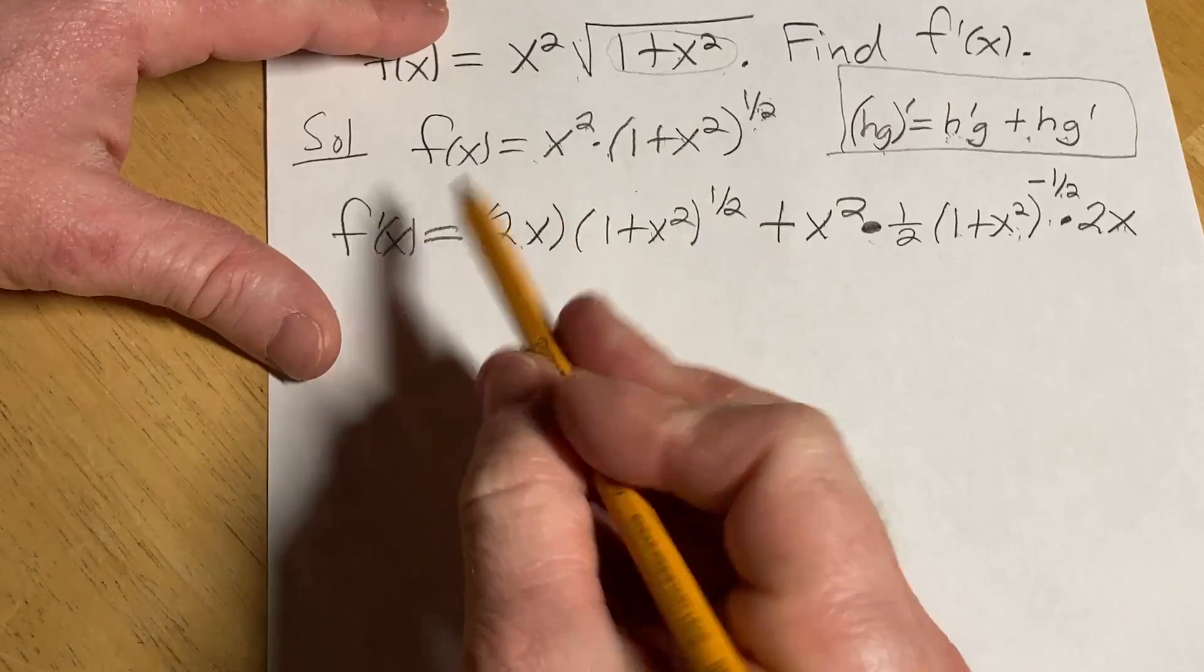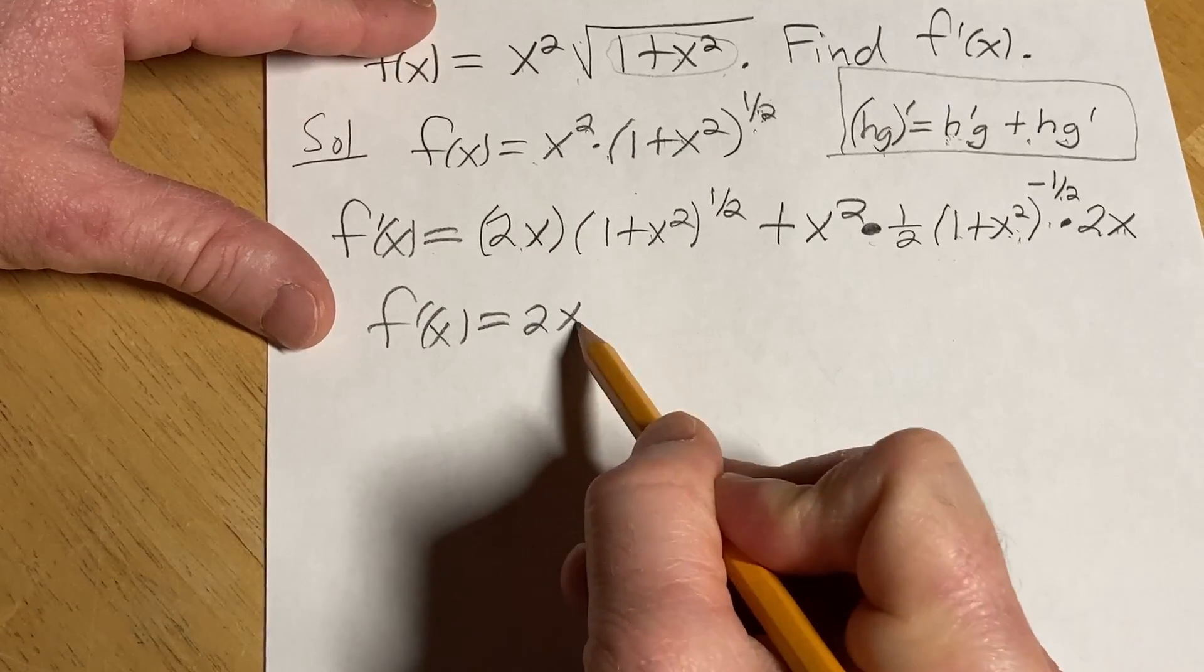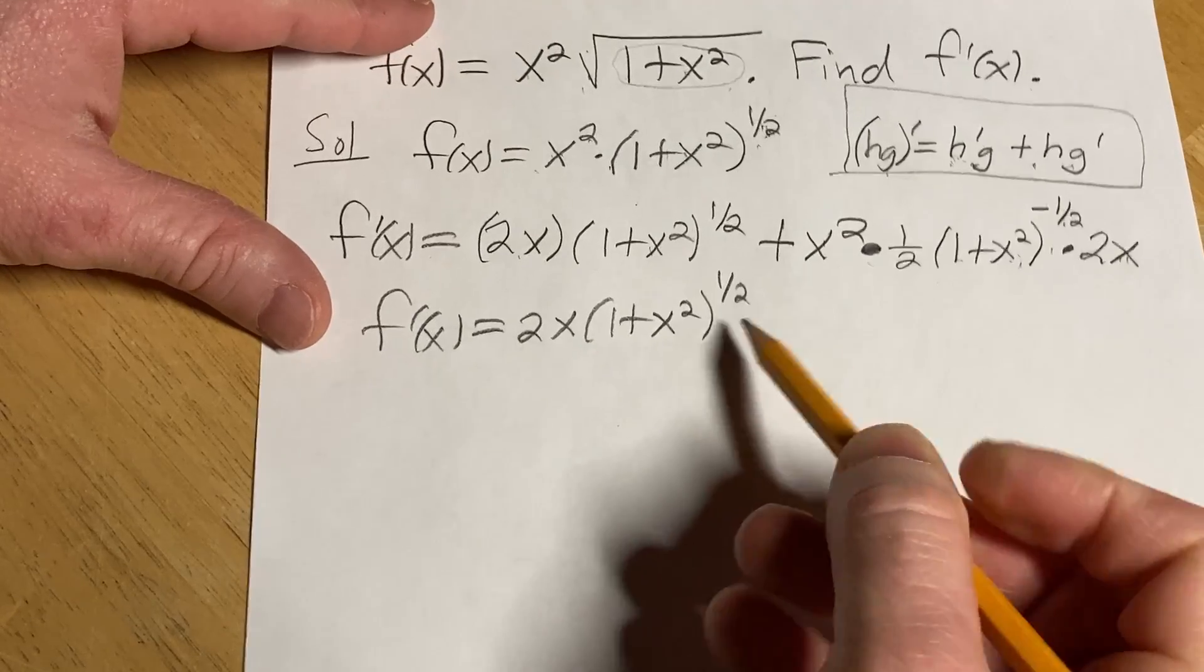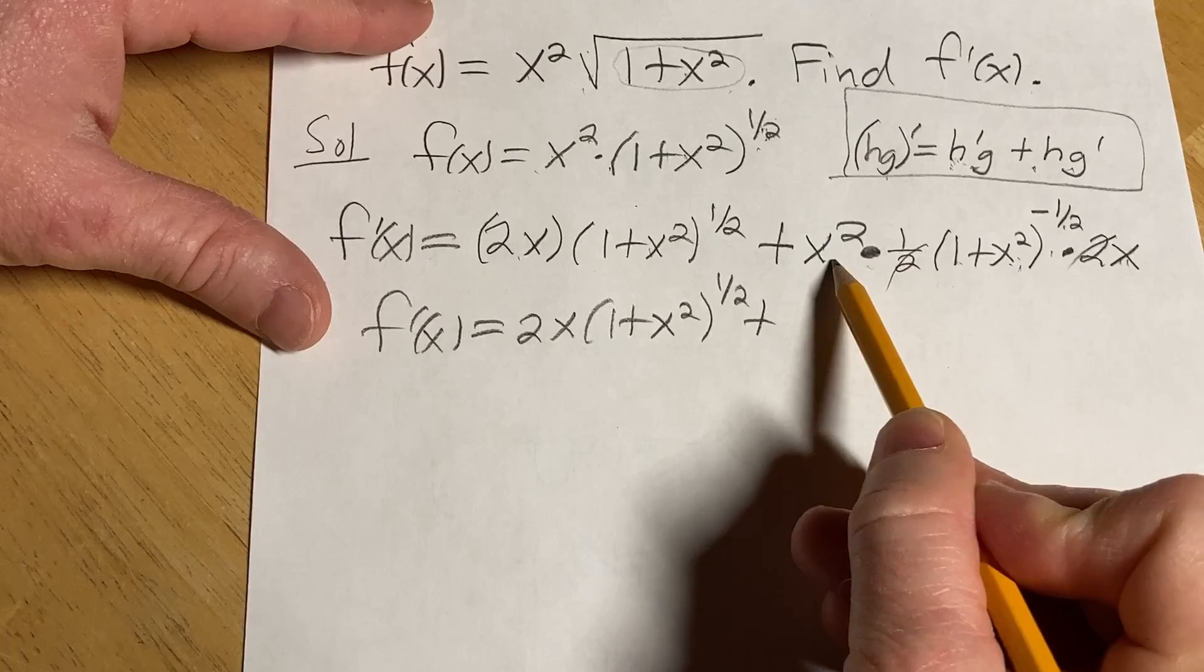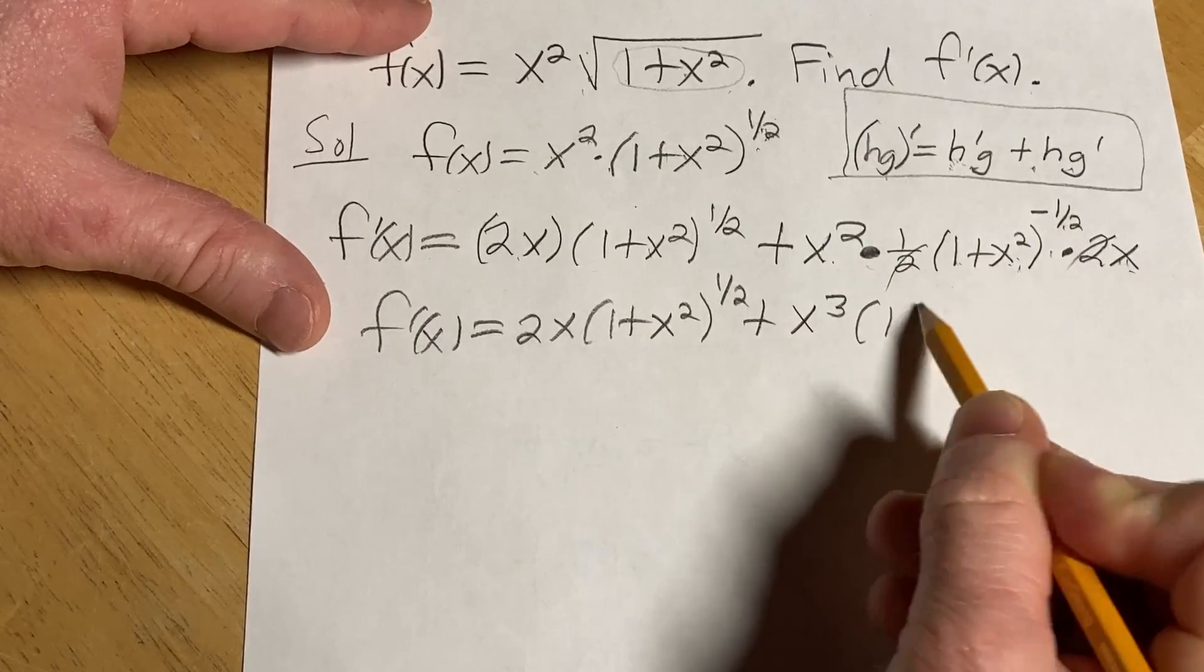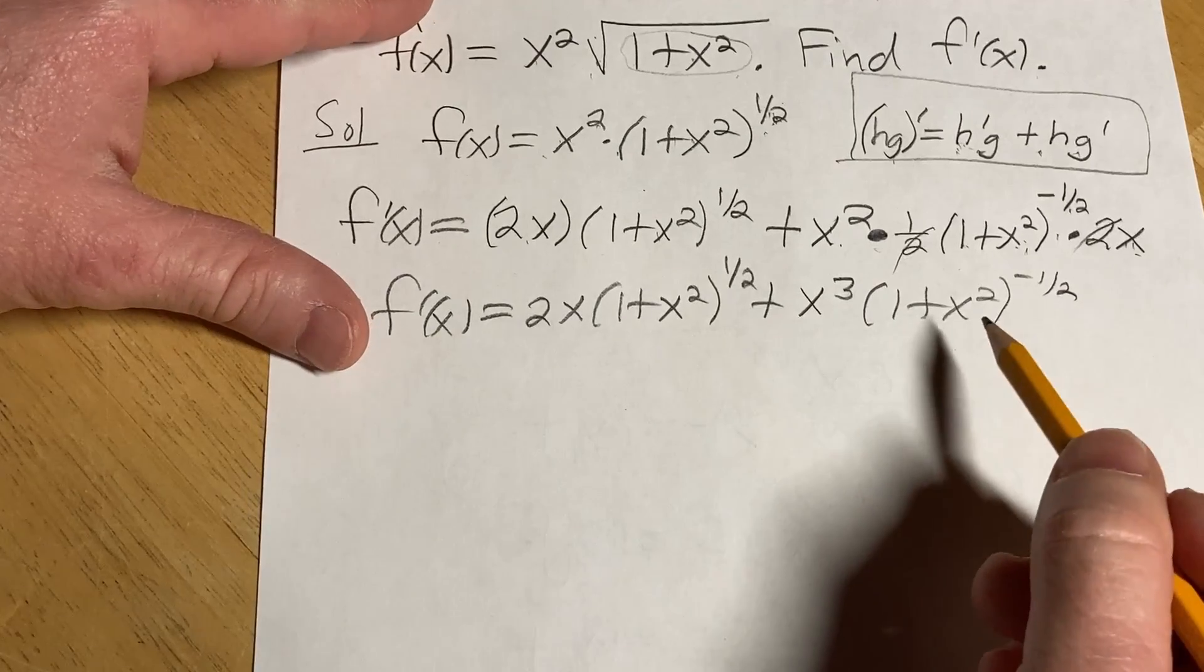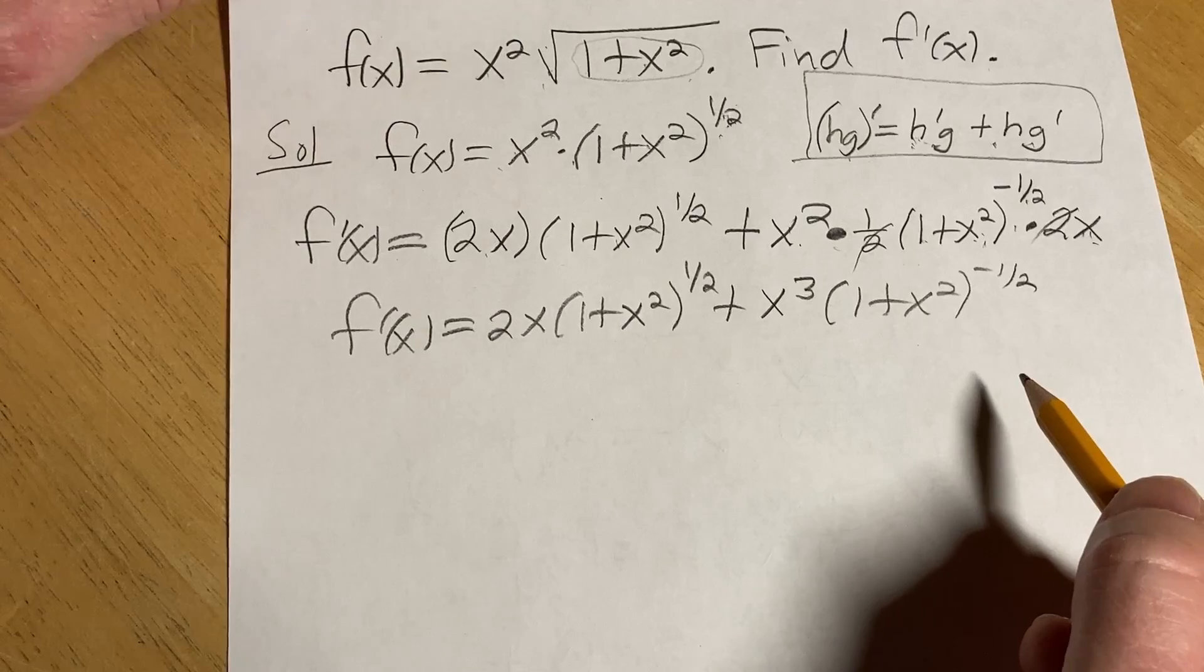So we have f prime of x equals 2x times 1 plus x squared to the 1 half. And these twos cancel. It's going to give us plus x squared times x is x cubed, and then 1 plus x squared to the negative 1 half. Now you could leave your answer like this. We're going to do a pro move though. We're going to clean this up in a very efficient way.